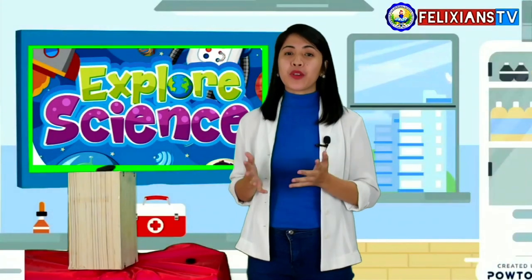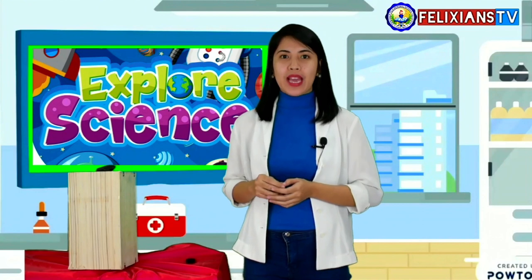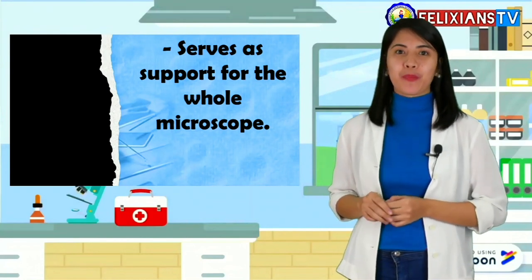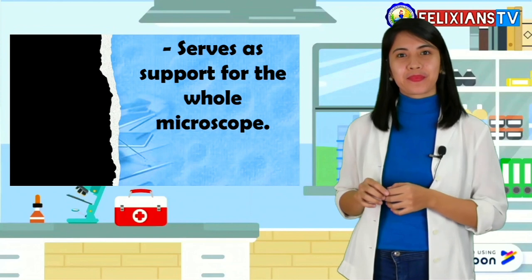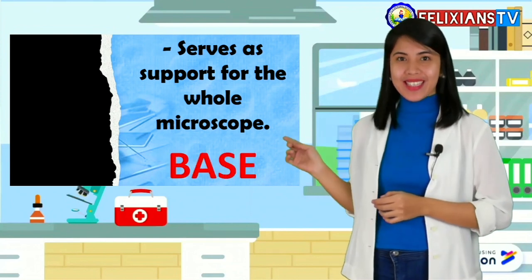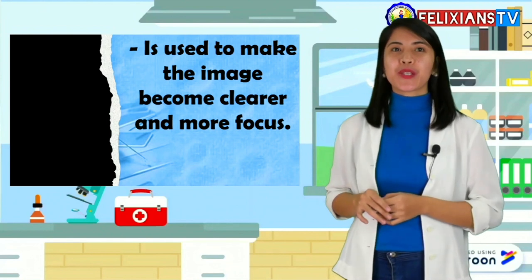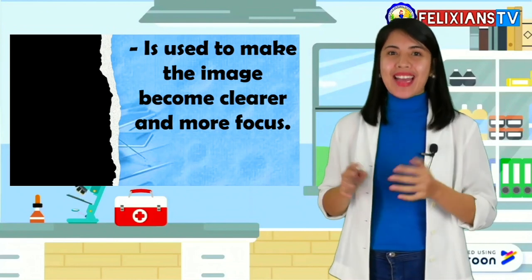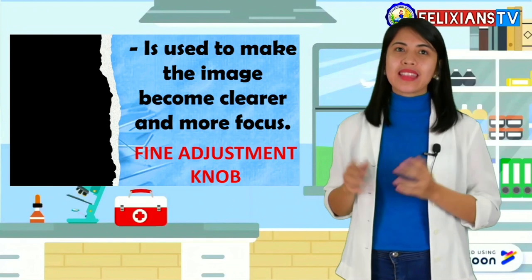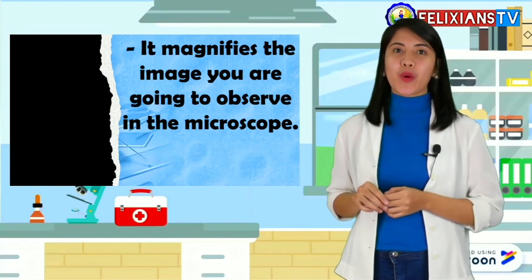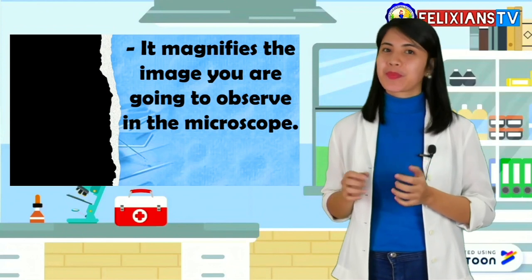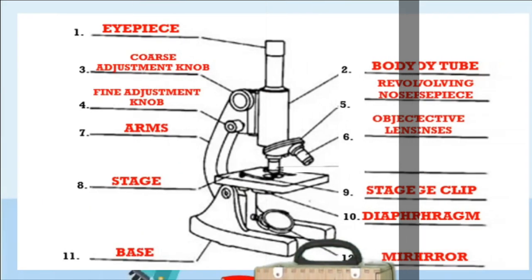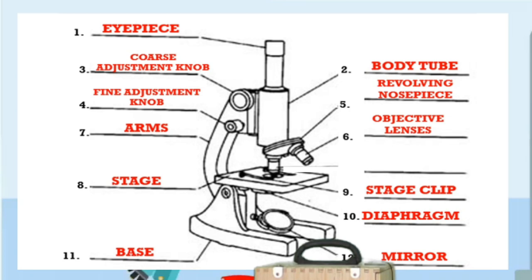Now, I am going to give you the function and then you are going to identify its part. Number one, it serves as the support for the whole microscope. What is that? Correct! That is the base. How about this one? It is used to make the image become clearer and more focused. Correct! That is the fine adjustment knob. And this one? It magnifies the image you are going to observe in the microscope. Great! That is the objective lens.